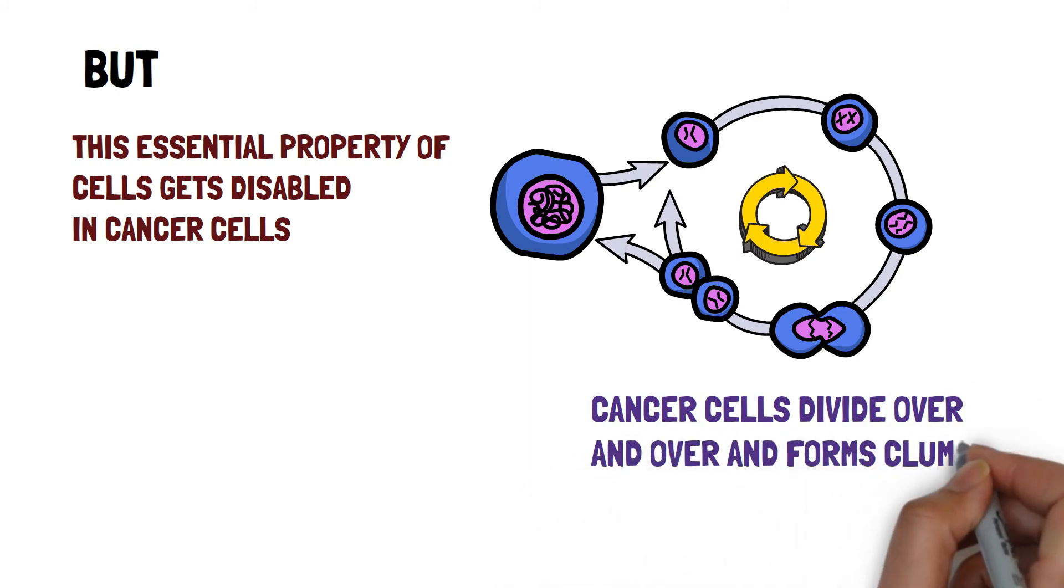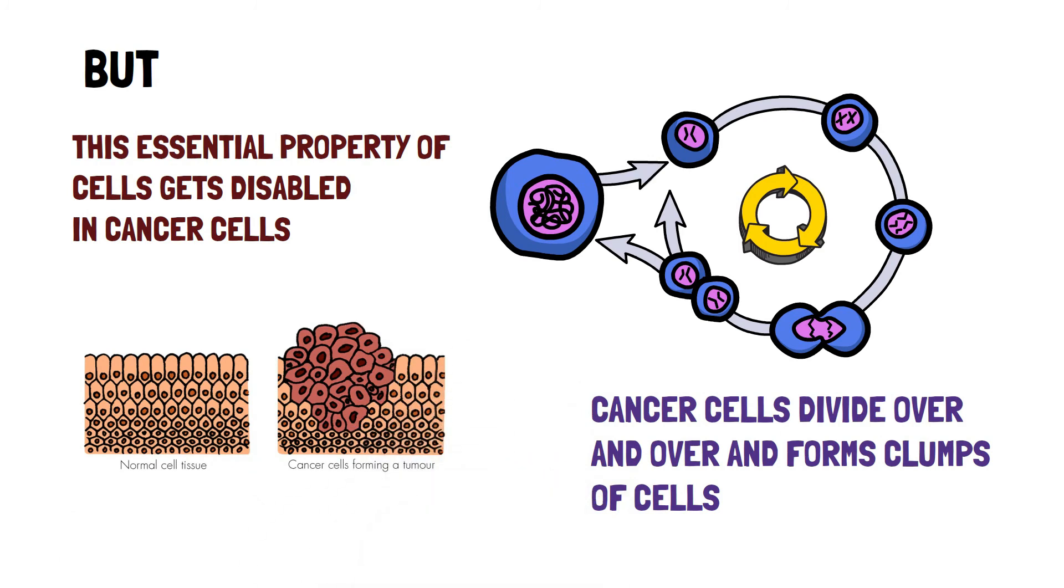The cells divide over each other and form clumps. These clumps of cancer cells are what are called as tumors.